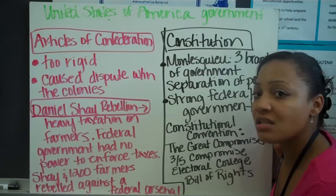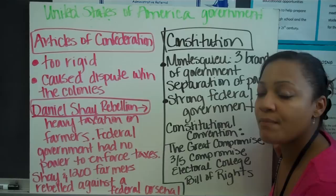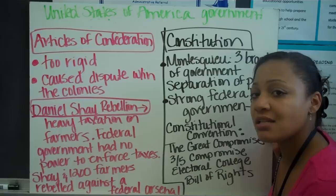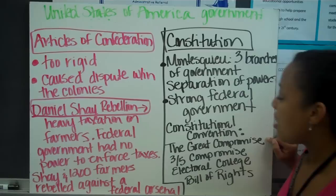So they came up with the compromise: in the Senate, regardless of state size, every state gets two senators. Today we have 100 senators because we have 50 states. The House of Representatives is based on population, which made the larger states happy. That's why it's called the Great Compromise — we have 435 members in the House of Representatives and 100 in the Senate, giving us 535 total members of Congress.